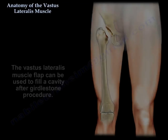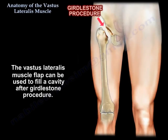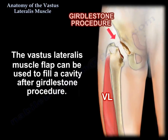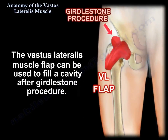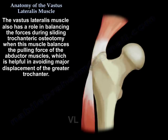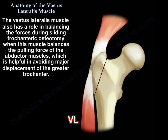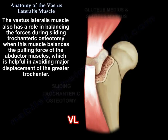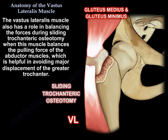The Vastus Lateralis muscle flap can be used to fill a cavity after a Girdelstone procedure. Additionally, this muscle has a role in balancing forces during a sliding trochanteric osteotomy, where it balances the pulling force of the abductor muscles, which is helpful in avoiding major displacement of the greater trochanter.